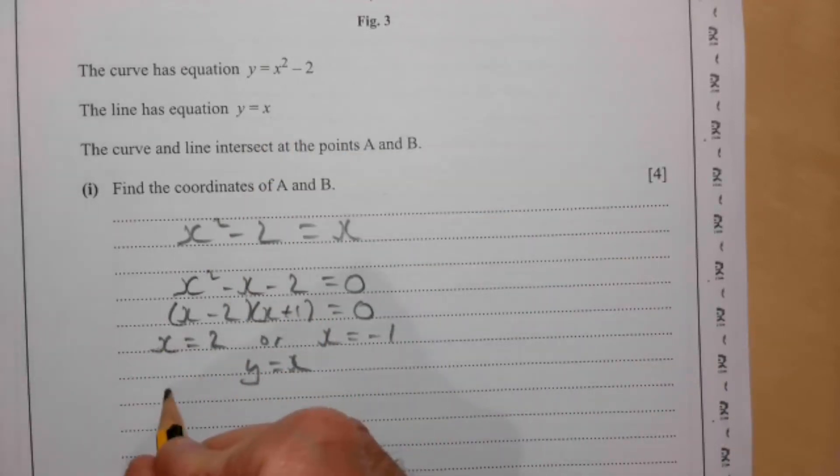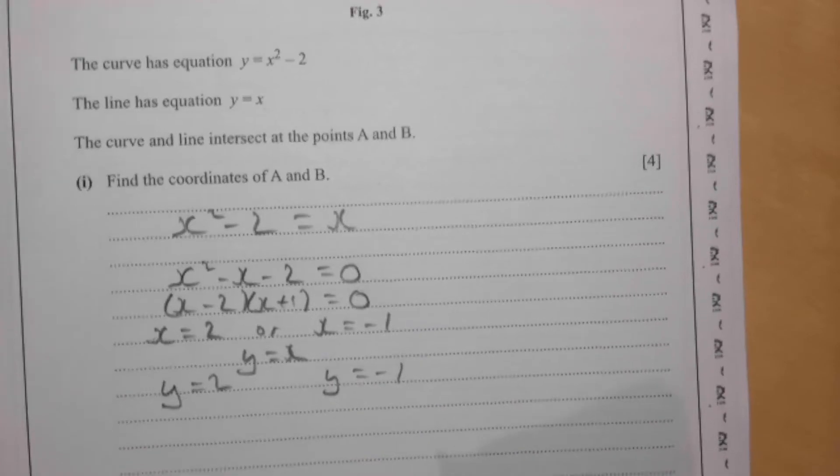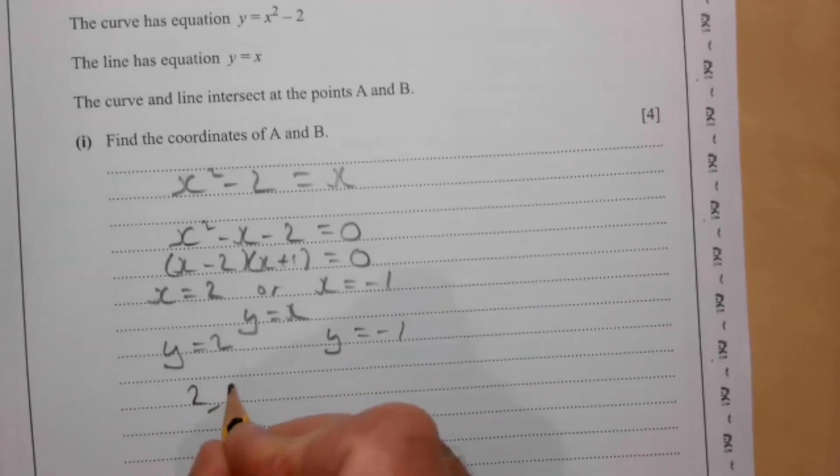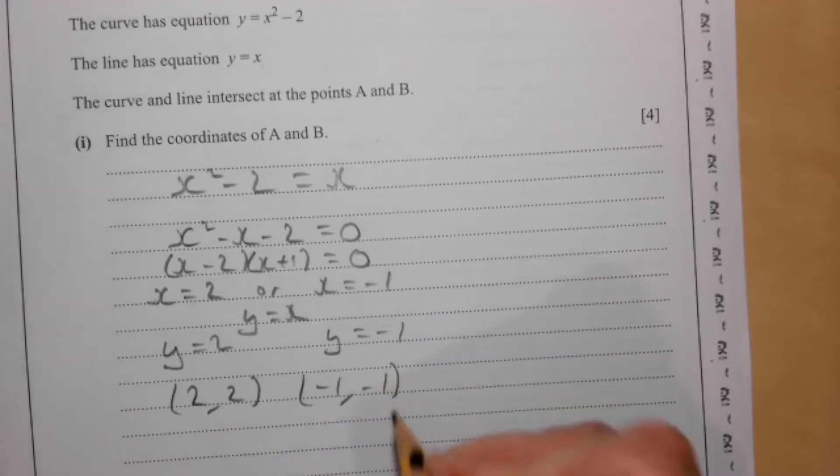If x is 2 then y is 2, and if x is minus 1, y is minus 1. So our coordinates are (2, 2) and (-1, -1).